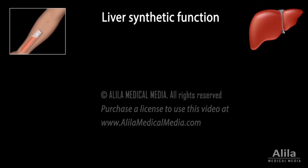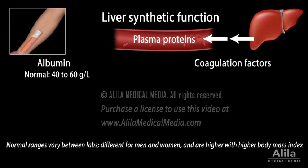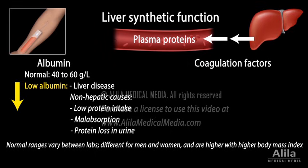The synthetic function of the liver can be assessed based on its ability to produce plasma proteins, such as albumin and coagulation factors. Serum albumin levels fall with all liver diseases. However, low serum albumin may also result from low protein intake, malabsorption, or abnormal loss of proteins in urine.